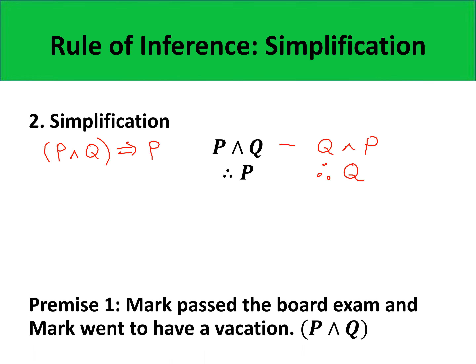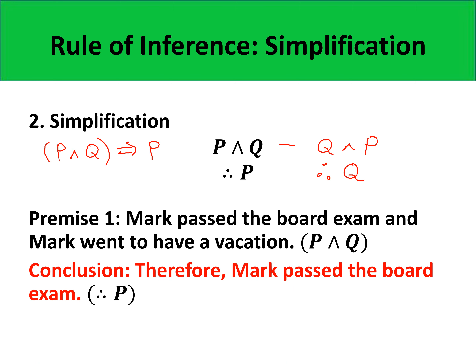As an illustration, premise one: Mark passed the board exam and Mark went to have a vacation. So P is Mark passed the board exam, and Q is Mark went to have a vacation. Our conclusion must be P, which is Mark passed the board exam. So we write: therefore, Mark passed the board exam.